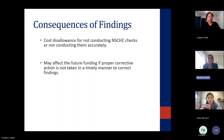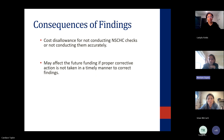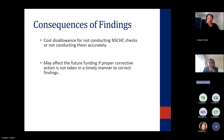The member service agreement must be signed before the member starts their service. If they have been enrolled on August 1st, the MSA must be signed before August 1st, but it will have the effective date of August 1st. Consequences of findings include cost disallowance for not conducting criminal history checks, and repeated uncorrected findings may affect your future funding.